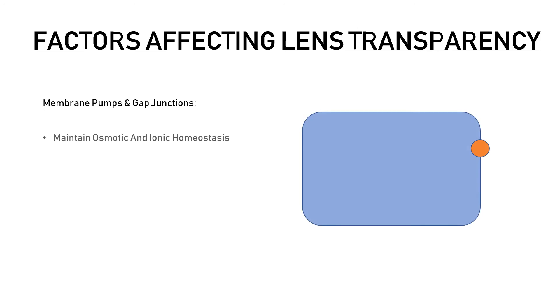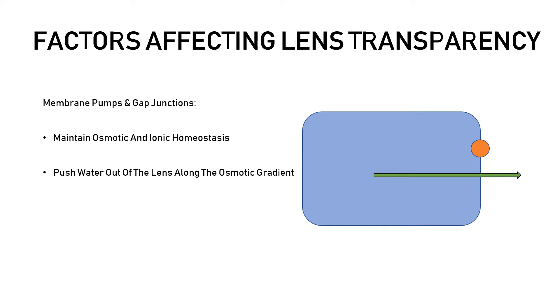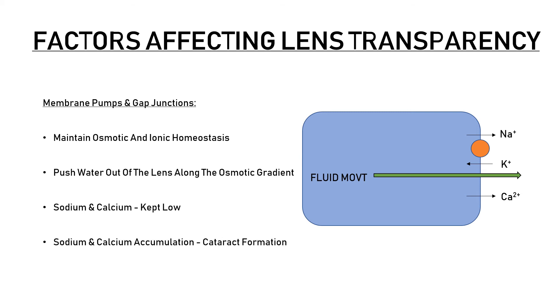Membrane energy pumps and gap junctions maintain the osmotic and ionic homeostasis of the cells. They maintain the lens in a dehydrated state by creating an osmotic gradient across the cell membrane. Sodium and calcium ions are pushed out while potassium levels are maintained intracellularly, creating a hypo-osmotic intracellular environment so that fluid flows out along the osmotic gradient. Increase in sodium and calcium levels along with marked loss of potassium has been implicated in the pathogenesis of cataract.